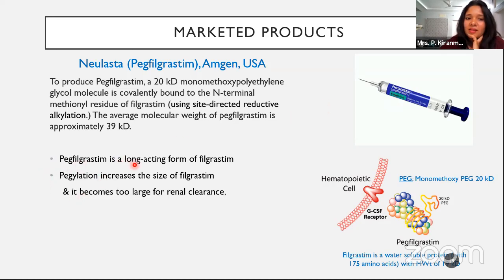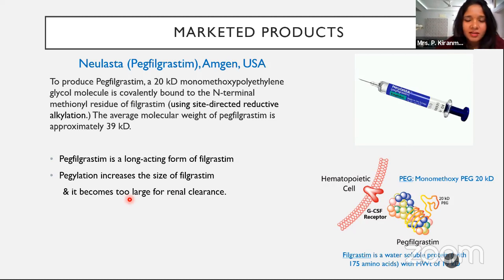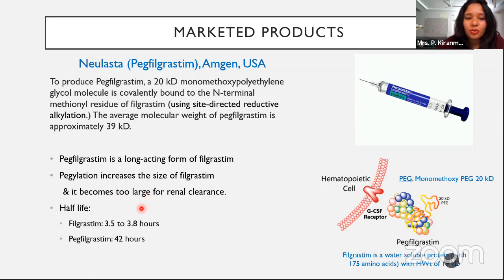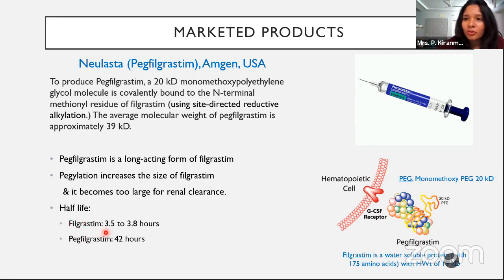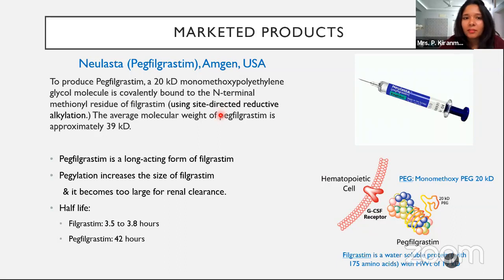What advantages has PEGylation brought to filgrastim? PEG filgrastim is the long-acting form of filgrastim. It has increased the size of filgrastim so it becomes a very large molecule, reducing renal clearance. Look at the beauty of this: the half-life of filgrastim — the parent molecule — is 3.5 to 3.8 hours. When it is PEGylated, the half-life goes to as high as 42 hours, which is more than 10 times higher than the parent molecule. So the number of doses could be reduced, and the cost of treatment could be reduced with PEGylation technology.